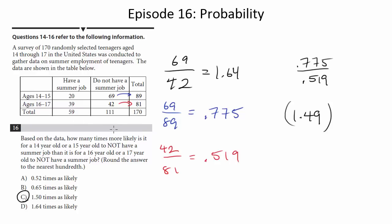And again, when you're comparing likelihood, likeliness, that's probability. It's chance. So what you need to do is compare the probabilities, not the raw numbers. So this one's C.